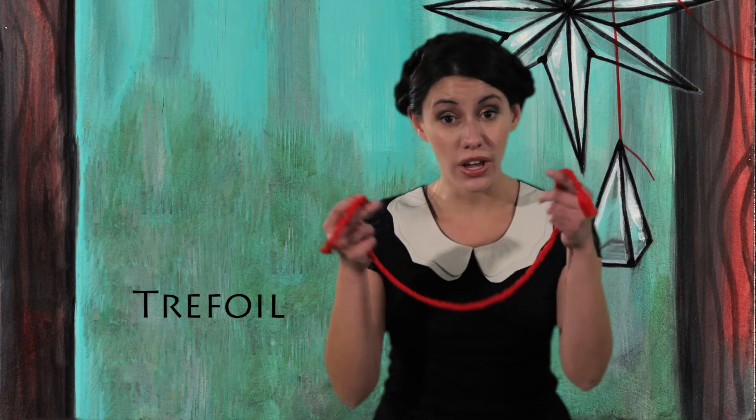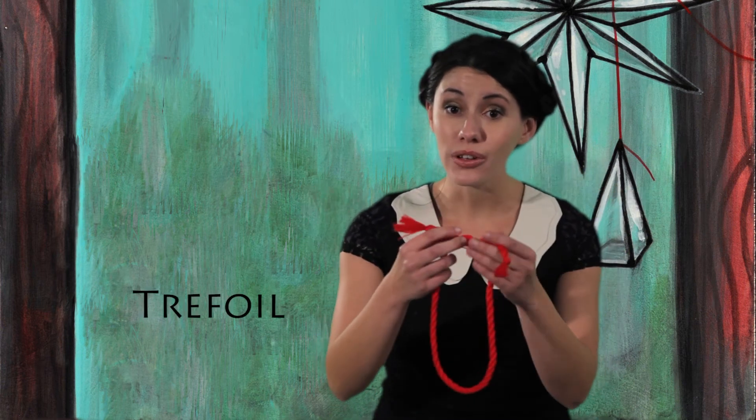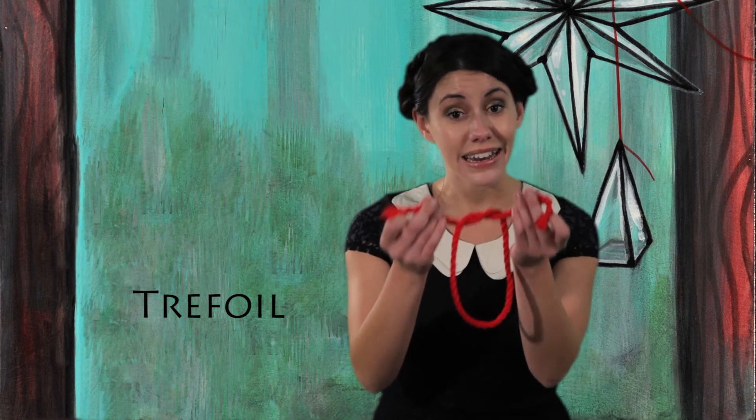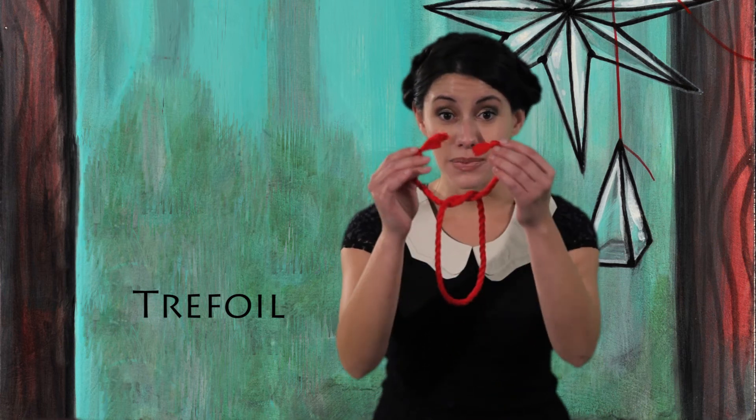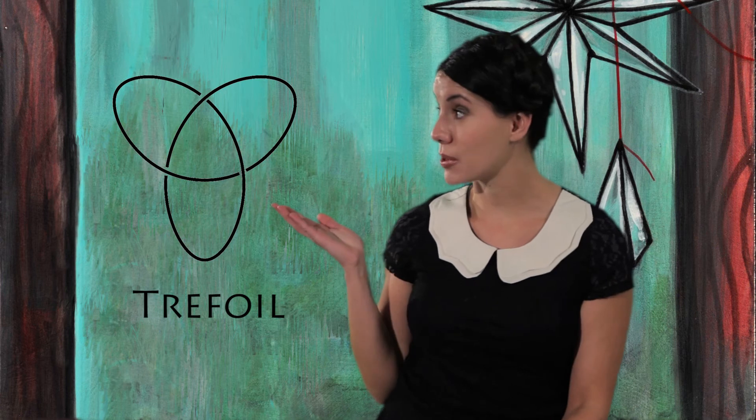The simplest knot you can make is called a trefoil. Just take a piece of string, tie a loop, and connect the tips. This is what it looks like when you spread it out on a table.